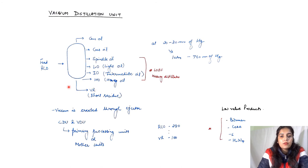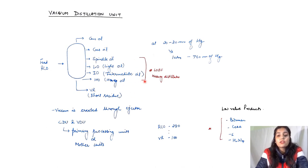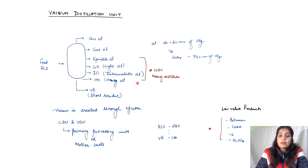Then there is VR, or short residue, which is the final residue. These are very heavy-natured oils and are also called LOBS — lube oil base stock. All the lubricants we see in the market, such as Castrol or IOCL's Servo 40, use these light oil, intermediate oil, heavy oil, and spindle oil fractions as base stock. These are the precursors or stocks for lubricant oils. This vacuum is achieved through ejectors and related equipment.